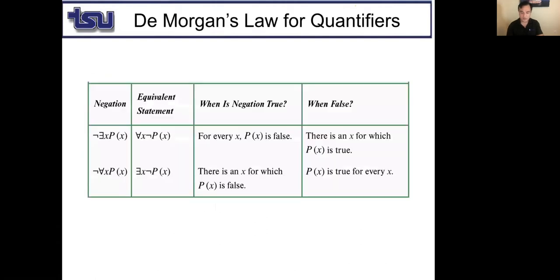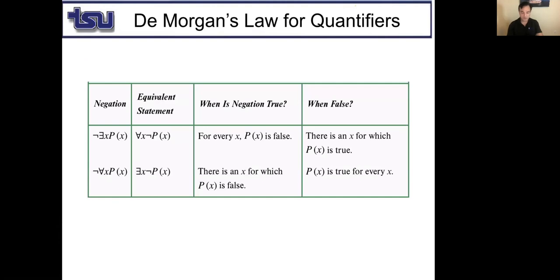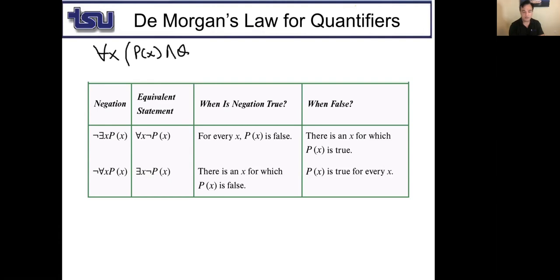To summarize: the negation of ∃x P(x) is ∀x ¬P(x), and the negation of ∀x P(x) is ∃x ¬P(x). Also remember: ∀x (P(x) ∧ Q(x)) ≡ (∀x P(x)) ∧ (∀x Q(x)).